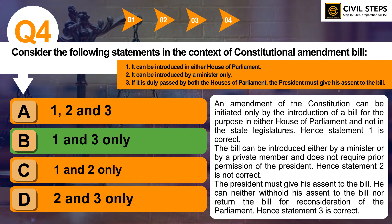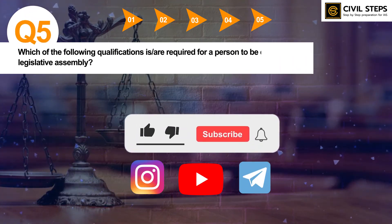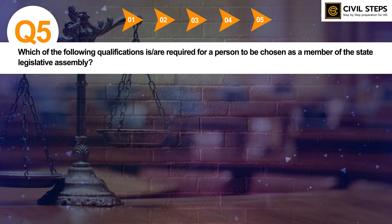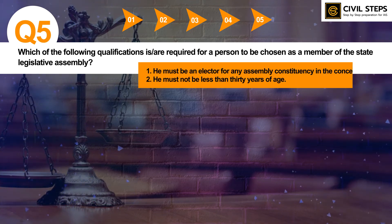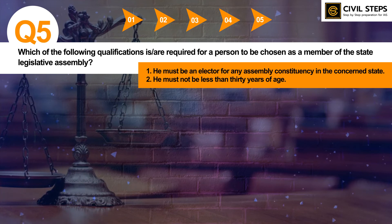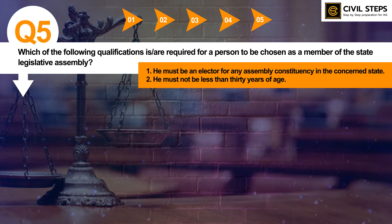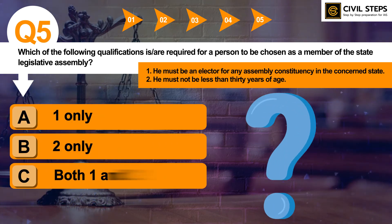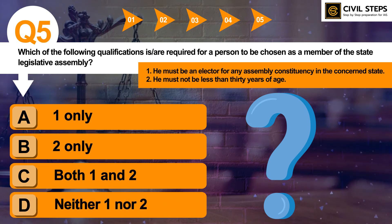This was all about question number 4. Let us now discuss the final question, question number 5. Which of the following qualifications is or are required for a person to be chosen as a member of the State Legislative Assembly? 1: He must be an elector for any Assembly constituency in the concerned state. 2: He must not be less than 30 years of age. Select the correct answer using the code given below. Option A: 1 only. B: 2 only. C: both 1 and 2. D: neither 1 nor 2.